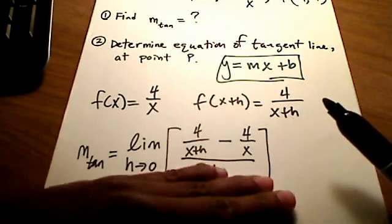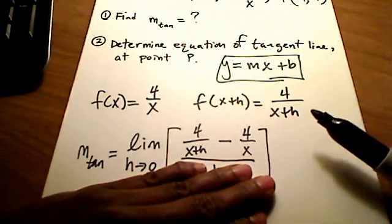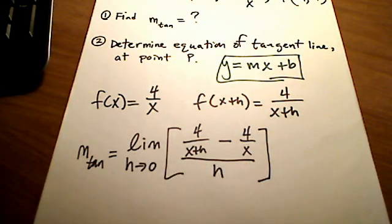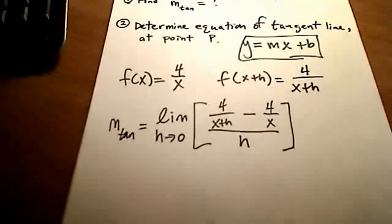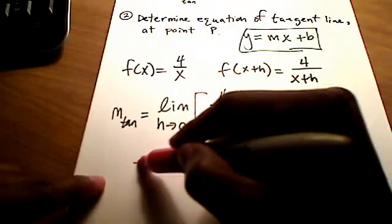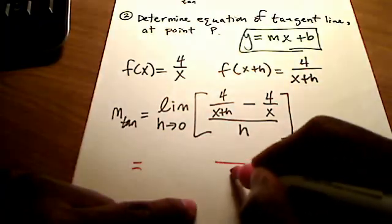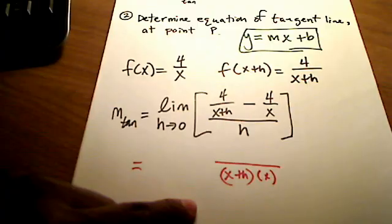So to put 0 in place of h, I should be able to simplify this complex fraction first. Let's ignore the denominator and concentrate on just the numerator. To do that, I need to subtract those two fractions. And to subtract fractions, I need an LCD. My LCD is going to be both of them, x plus h and x.